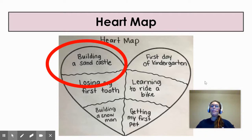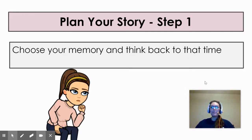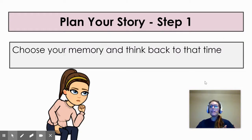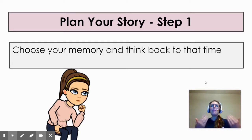I'm going to choose to write about building a sandcastle. Now it's time to plan our story. I am going to model what you will also be doing. Our first step is to choose a memory and think back to that time. So I have chosen my memory, which is building sandcastles with my brother. Now I need to think back to that time — put myself in that memory. Where were we? What did it look like? What did it feel like? What sounds did I hear? What smells were there? Really think back and get into that memory. The more you can remember, the more details you can add in your writing.